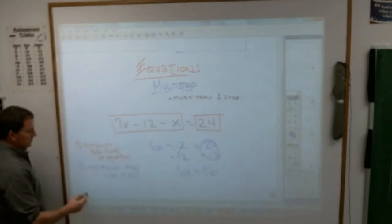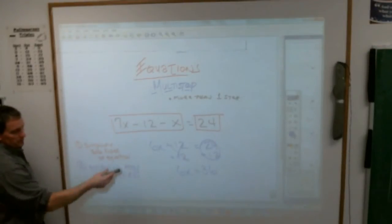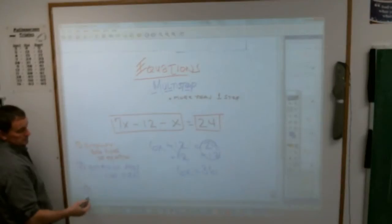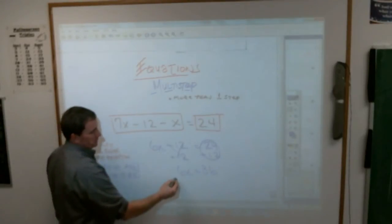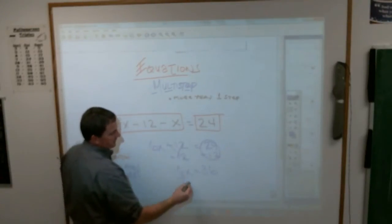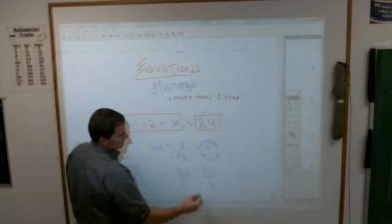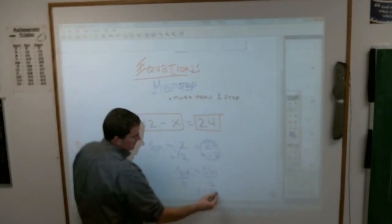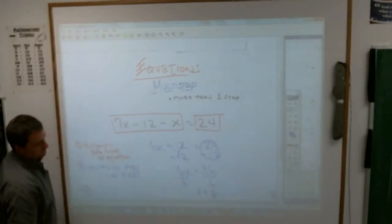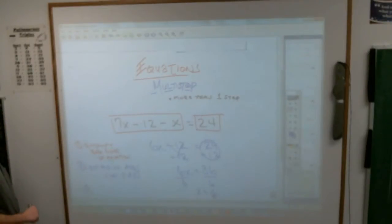And then pretty much really your last step is going to be some sort of multiplication slash division. Which means you're going to divide by 6. Divide by 6. So x is going to equal 6.